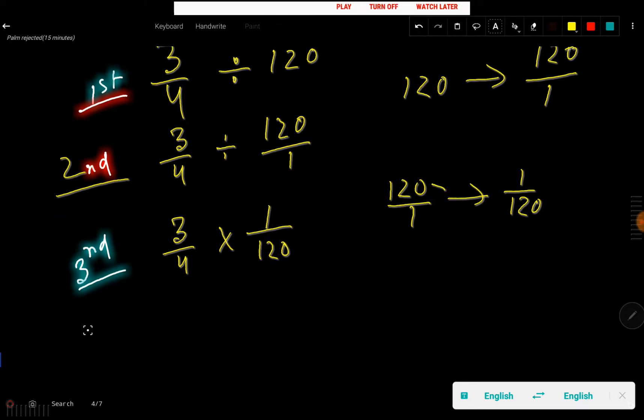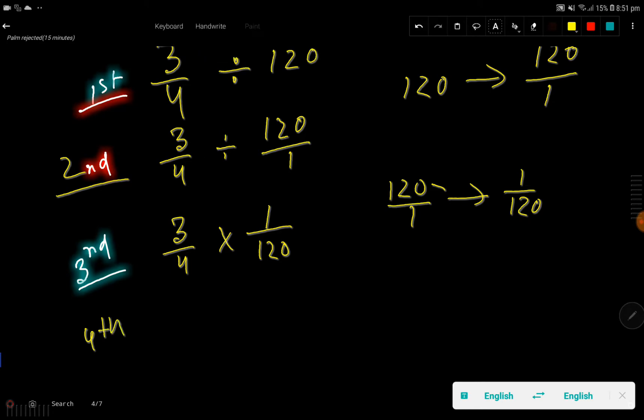Now in the fourth step, I will multiply, look, I will multiply top to top and bottom to bottom. So 3 times 1 divided by 4 times 120. So we are getting a new fraction.